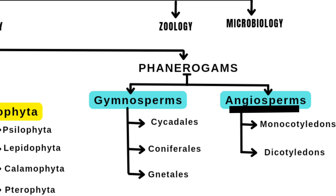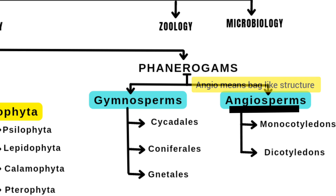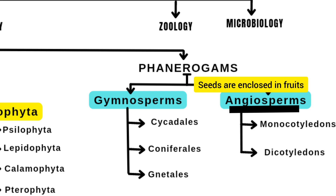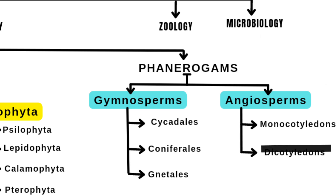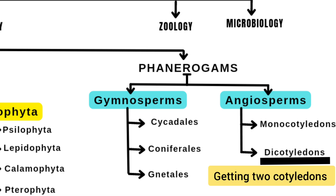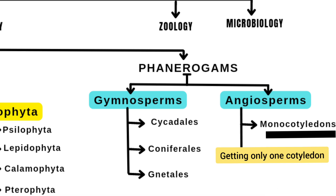The next seed-bearing group is angiosperms. 'Angio' means bag-like or enclosed structure, and 'sperm' means seed — so plants where seeds are enclosed inside fruit belong to angiosperms. Here the ovary is present with ovules; later the ovary converts into fruit and ovules convert into seeds. Angiosperms are further differentiated into dicotyledons and monocotyledons. In dicotyledons, after germination we get two cotyledons, and in monocotyledons we get only one cotyledon.